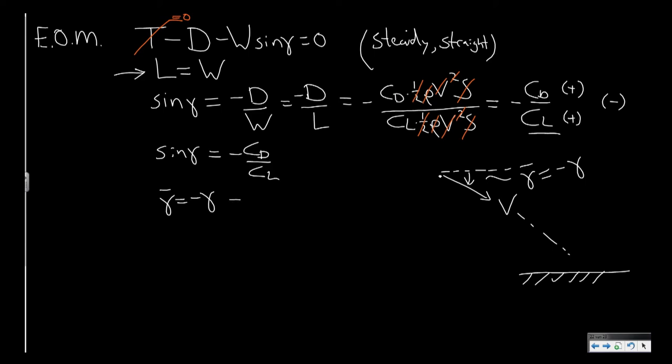So since gamma is minus or the descent angle is minus the climb angle, we could also state that the sine of the descent angle will be equal to CD over CL. So this minus term here is removed. So that is a nice result, because if we want to achieve a minimum descent angle, so I want to have this angle as small as possible,